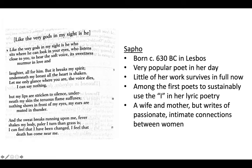This poem is kind of hard to understand — it usually takes a couple of readings. This is another one where the first line becomes the title. I'll read the whole thing and then we'll talk about it. "Like the very gods in my sight is he who sits where he can look in your eyes, who listens close to you to hear the soft voice, its sweetness, murmur and love and laughter all for him. But it breaks my spirit underneath my breast. All the heart is shaken. Let me only glance where you are, the voice dies. I can say nothing, but my lips are stricken to silence."